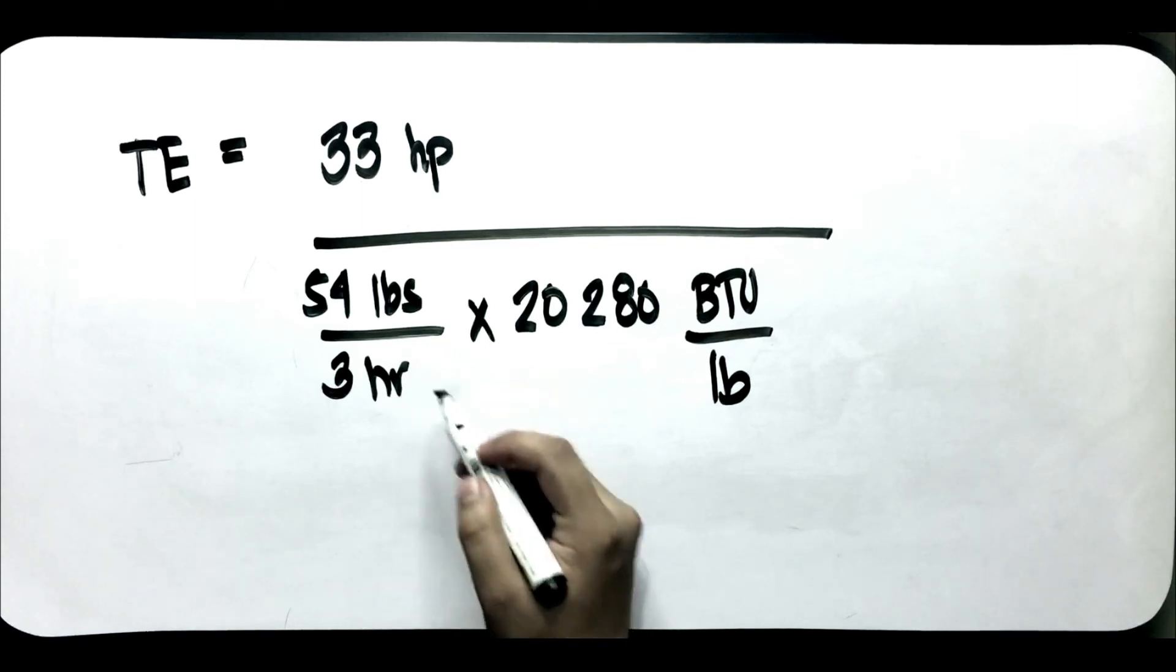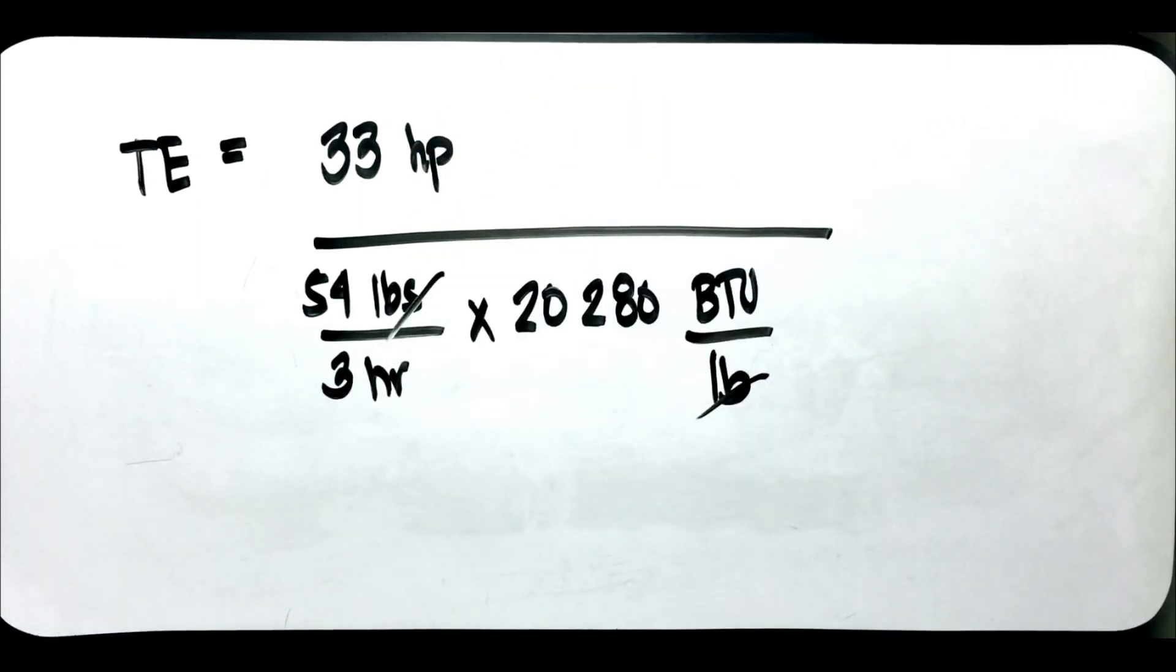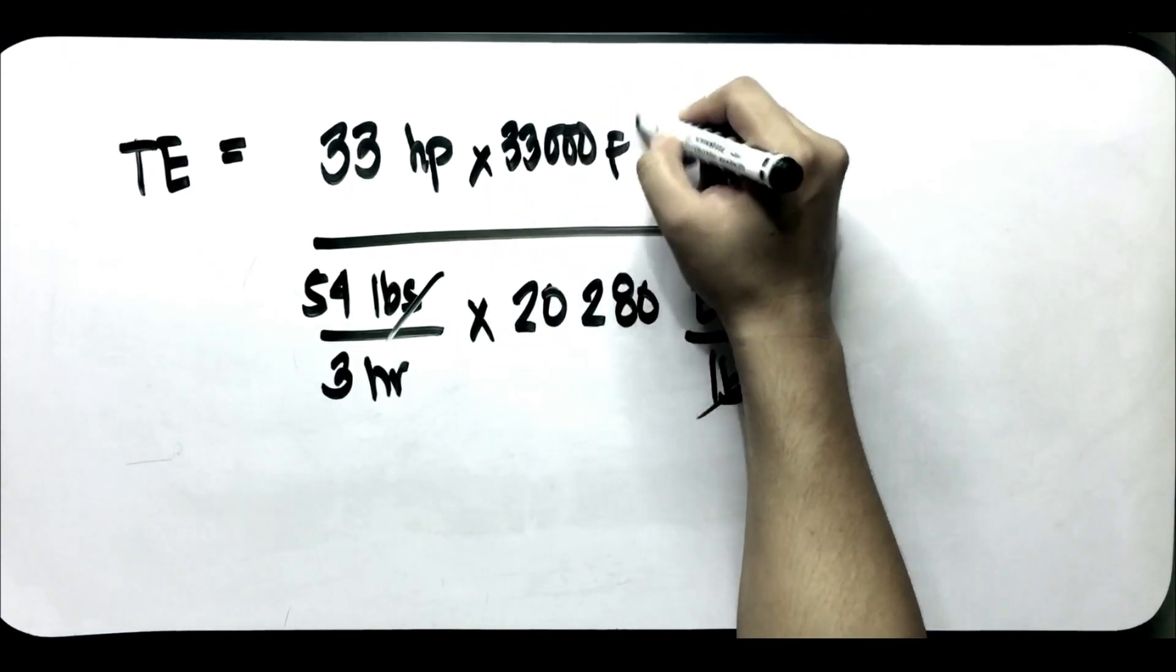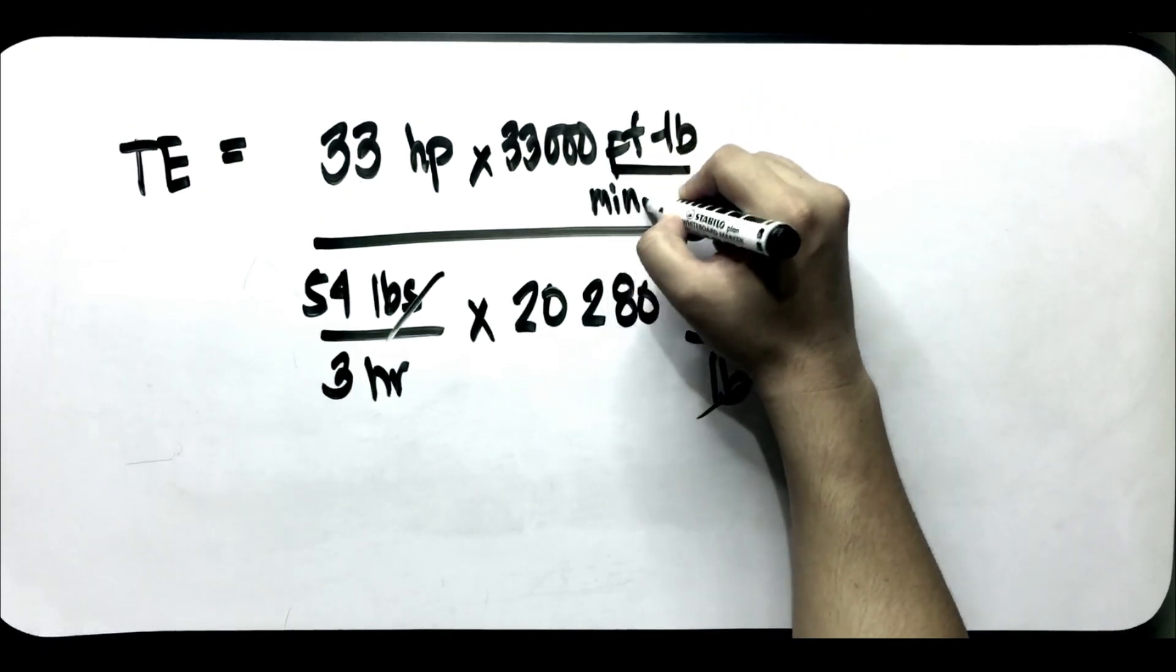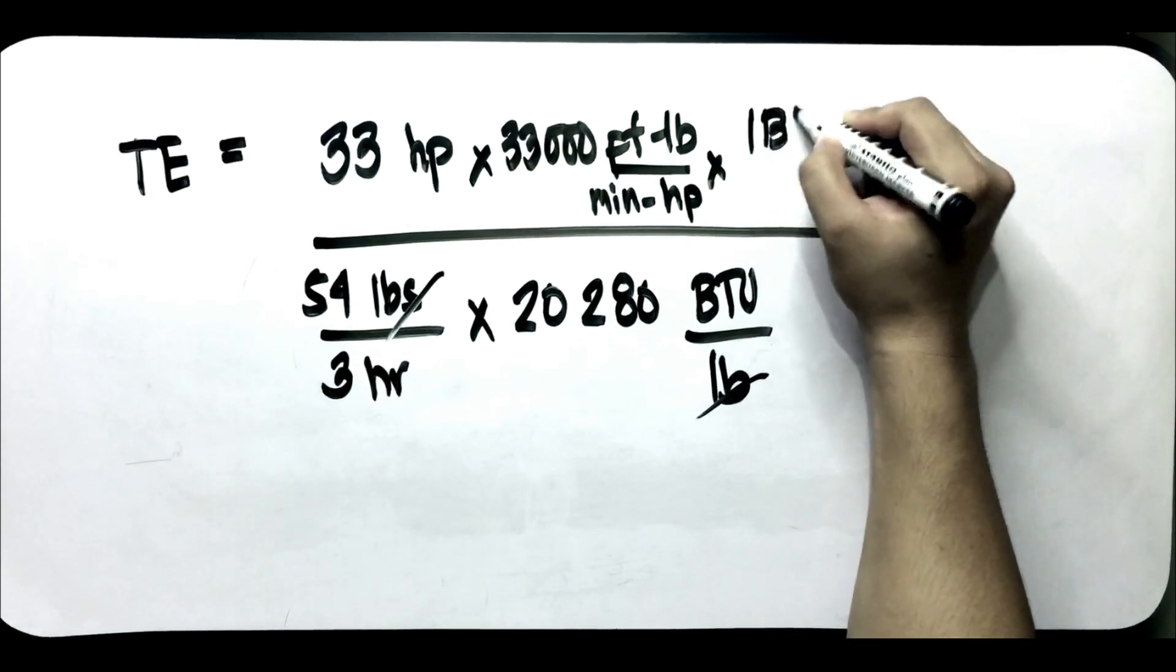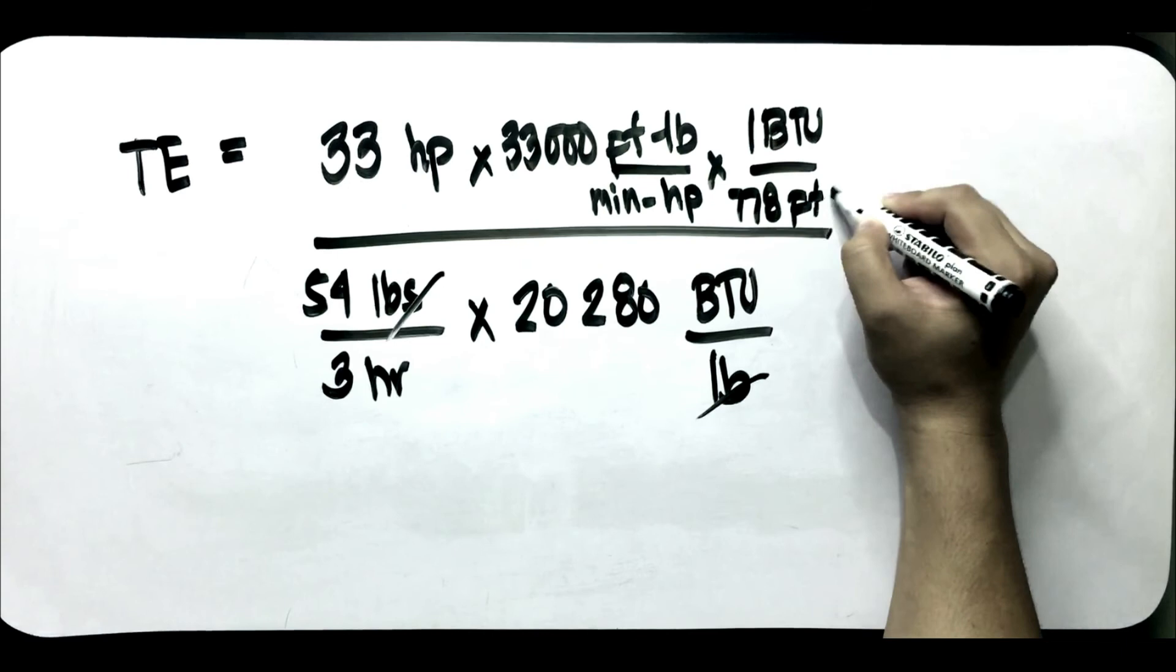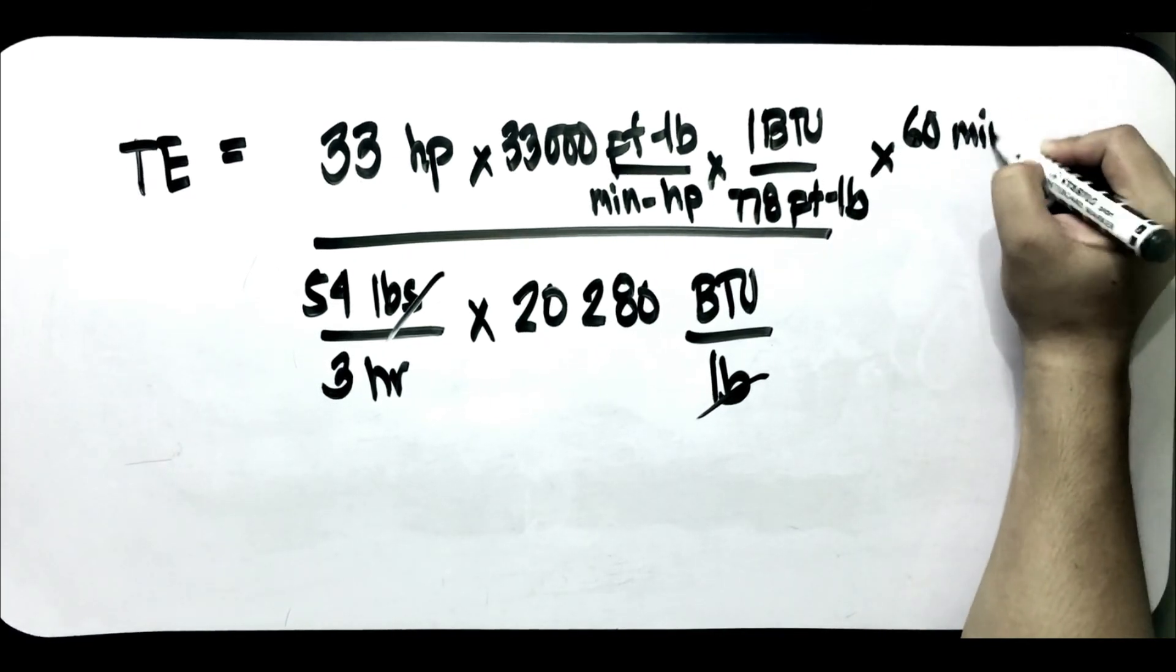Next, since maka-cancel na ito, meron tayong BTU per hour, dapat ito ay naka-BTU per hour din. Kaya mumultiply natin ito ng 33,000 foot pound per minute HP times 1 BTU per 778 foot pound. And, meron tayong 60 minutes per hour.